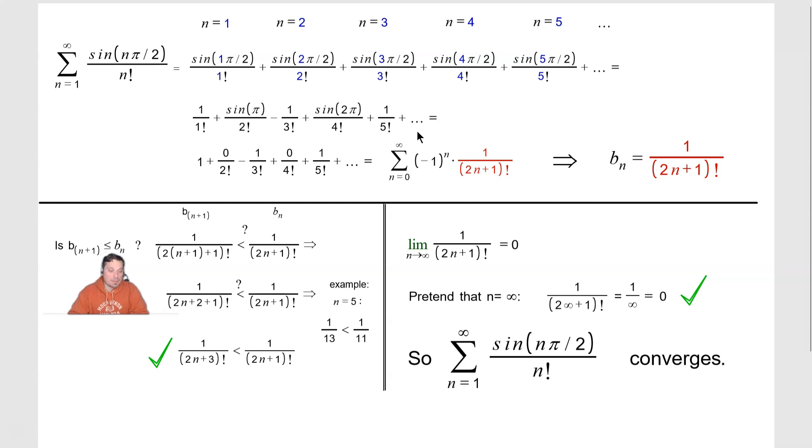So what is b sub n plus 1? That's the column on the left here. So that means you go over here and you replace every occurrence of n with n plus 1 and simplify. So I'm going to have 1 over 2 times n plus 1 plus 1.